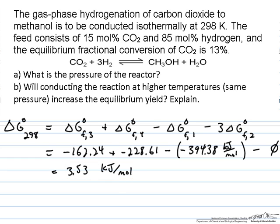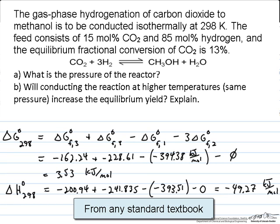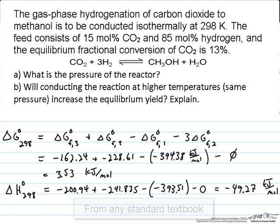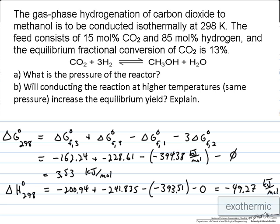Similarly, we can write out the same sort of expression for delta H of reaction at 298 Kelvin. We get that the delta H of reaction is negative 49.3 kilojoules per mole, and so this is an exothermic reaction.